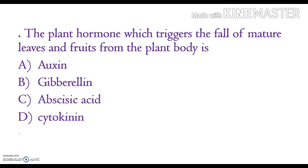Our first question is: the plant hormone which triggers the fall of mature leaves and fruits from the plant body. The options are auxin, gibberellin, abscisic acid, and cytokinin. The correct answer is option C, abscisic acid.